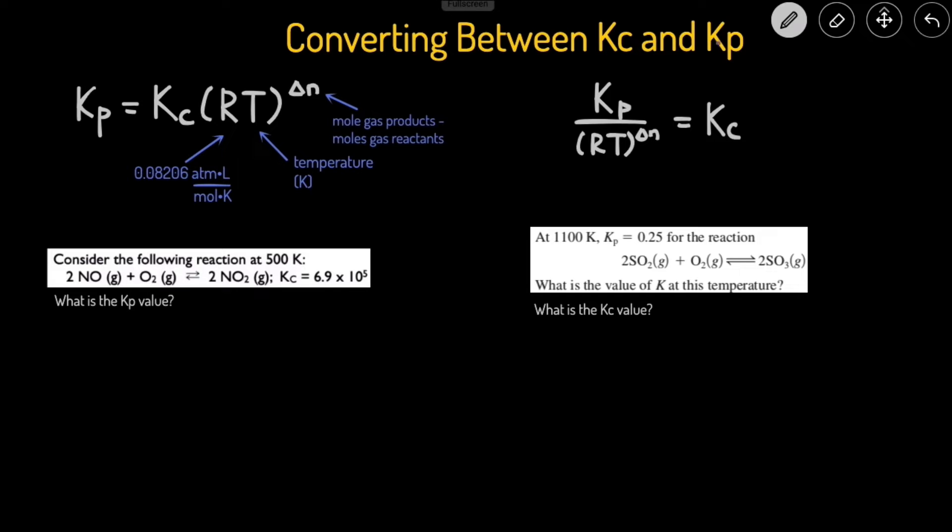And Kp is the equilibrium constant using pressure, pressure products over pressure reactants. This is the equation that we would use if we're given Kc and we want to figure out Kp.